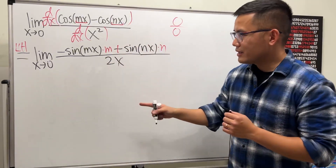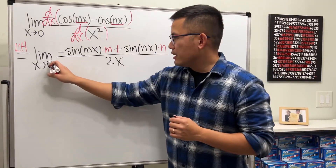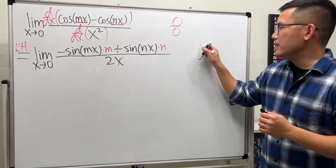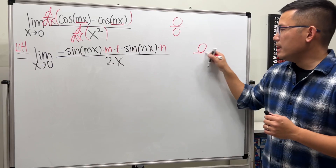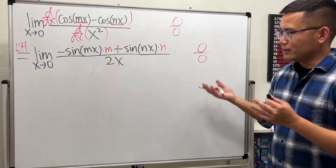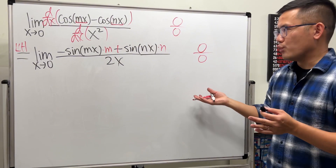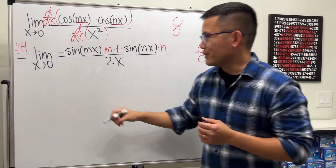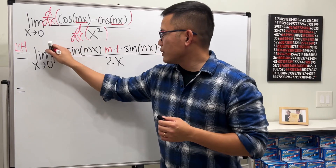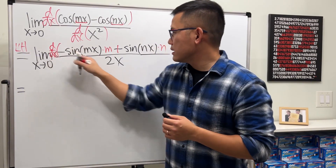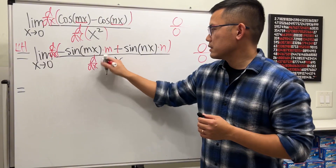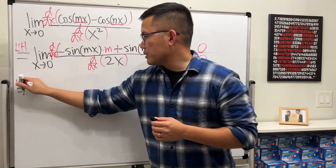If we put zero in here and here, the top gives zero again and the bottom gives zero again. So we have to use L'Hôpital's Rule one more time. Let's do it — differentiate the top and differentiate the bottom.